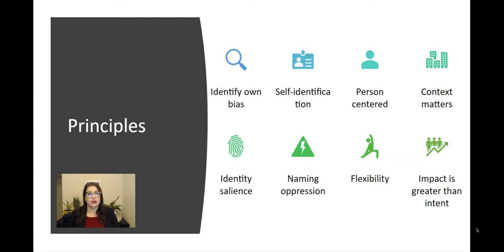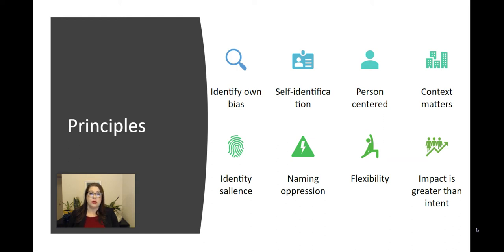Once we've done some of that internal self-reflexive work, we want to start thinking through what this looks like. A really important principle is self-identification. We want to make sure that we're listening very carefully to how folks talk about themselves and then mirror that language back when we're in communication with them. People will make different choices — there's very little consensus about the best possible practice. That's why reflective and effective active listening is really important, and then honoring the choices that people are making about their own identity.